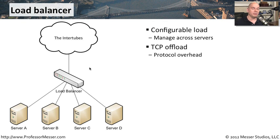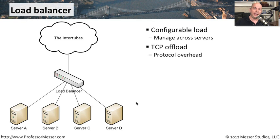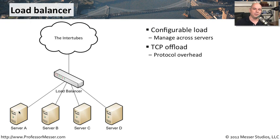These load balancers can also do something called TCP offloading. Whenever you're setting up a TCP connection, there's a handshake that has to take place, and if the load balancer had to do a handshake every time it connected to a device, there would be more overhead associated with those transactions. What load balancers tend to do is set up a single persistent connection and use that connection all the time — not constantly setting up handshakes and tearing down connections, but simply getting it running and leaving it up the entire time.